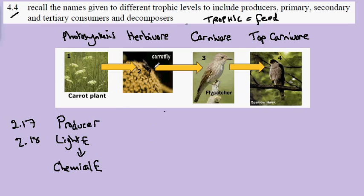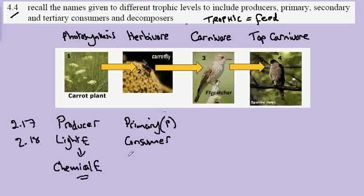The carrot fly eating the carrot plant is called a primary consumer. The primary consumer takes in the chemical energy of the plant, so we take the chemical energy of the plant and turn it into chemical energy of the fly — we're changing the form of the chemical energy.